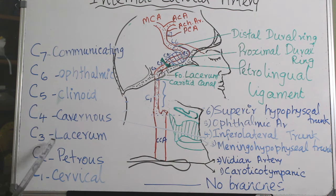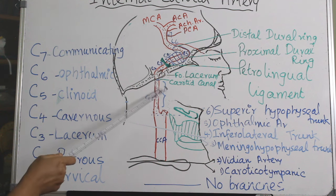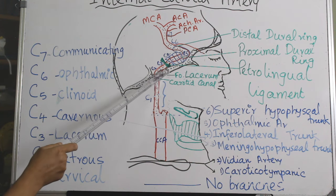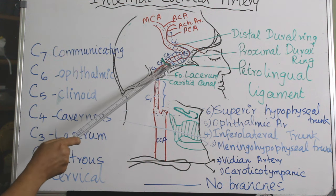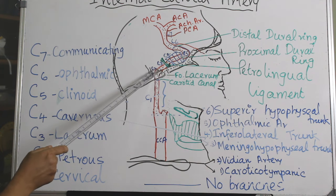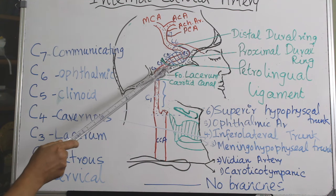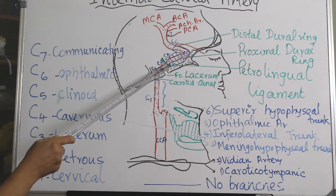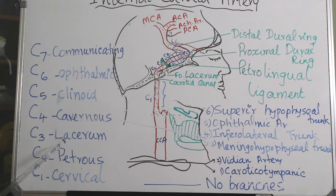The next segment is C3, or the lacerum segment, from the posterior edge of the foramen lacerum to the superior margin of the petrolingual ligament. There are no consistent branches from the third segment, though occasionally pterygoid branches arise from it.